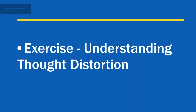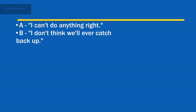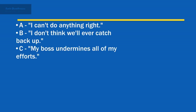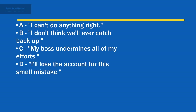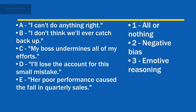Let's try an exercise. Match each example of a thought to the type of thought distortion involved. The options are: 'I can't do anything right,' 'I don't think we'll ever catch back up,' 'My boss undermines all of my efforts,' 'I lose the account for this small mistake,' and 'Her poor performance caused the fall in quarterly sales.' The targets are: all or nothing, negative bias, emotive reasoning, exaggeration, and blame.